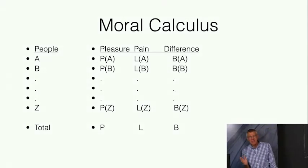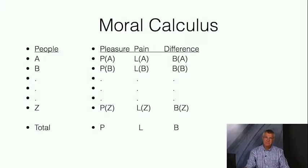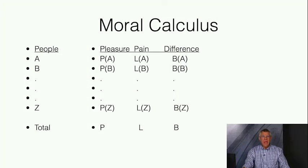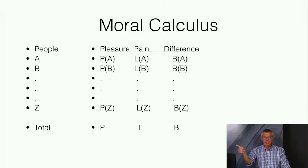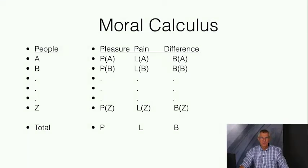One way to think about it is to fill in a balance sheet—a spreadsheet. First, we identify the people who might be affected by our action, listed here as A through Z. Then we identify the options. Identifying the options first might make it easier to be sure we've got all the people who might be affected. Then, for each option, we prepare a spreadsheet and figure out what the total expected effects on the community are. For each person—let's take A, the very first row—I have to say: what are the expected pleasures for A?